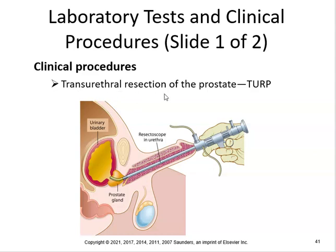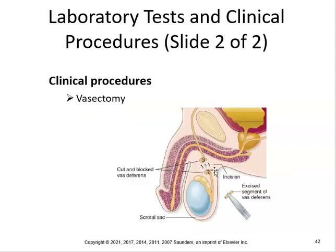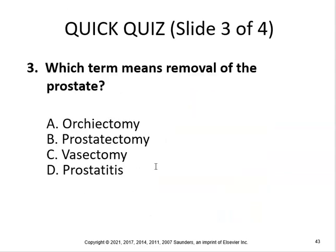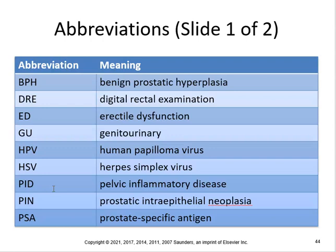Clinical procedures include the transurethral resection of the prostate, or TURP, where a resectoscope is inserted and used to remove excess prostate tissue. A vasectomy involves making a small incision, then cutting, suturing, and cauterizing the vas deferens so sperm cannot leave the body — though rare vasectomy failures do occur. The term prostatectomy means removal of the prostate; prostat- is the root and -ectomy means removal.